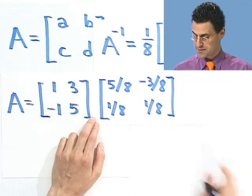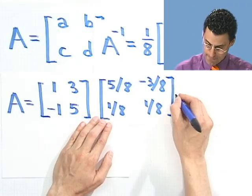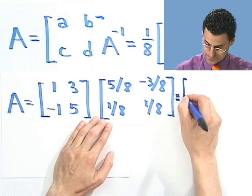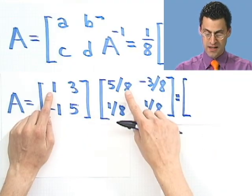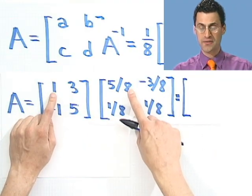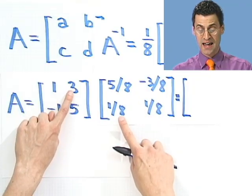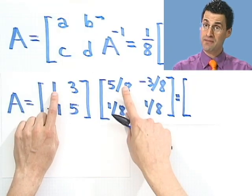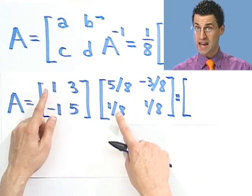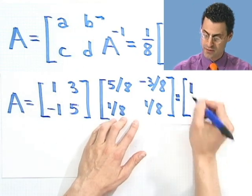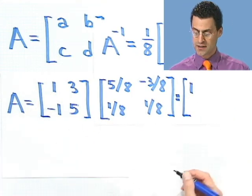Well, let's see what that product is. So if we take that product, I see 1 times 5 eighths, which is 5 eighths. And I add to it 3 eighths. Well, 5 eighths plus 3 eighths is just 8 eighths, which is 1. So that's a good way to start because that's the first element of the identity.